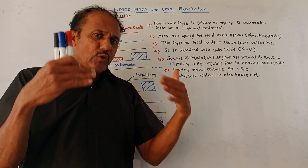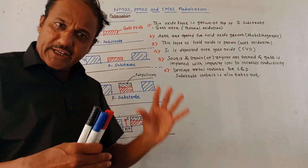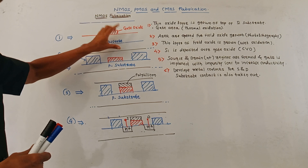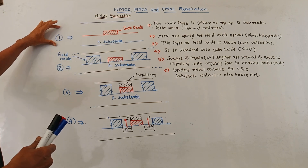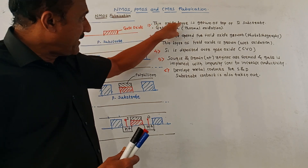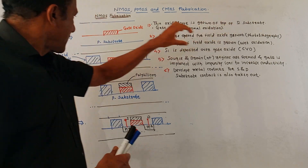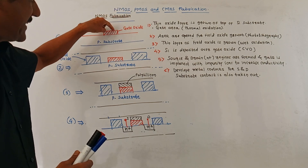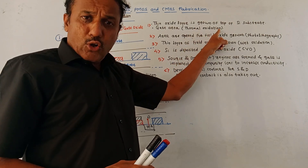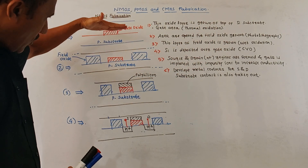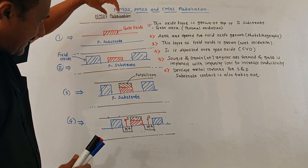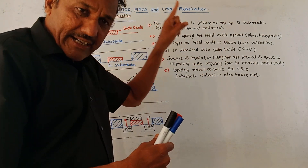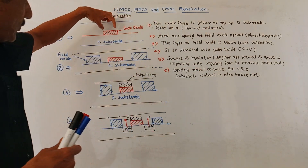The N-MOS fabrication is a very lengthy process, so I will explain the important steps required. To fabricate an N-MOS device, a P-type substrate is used. A thin oxide layer is grown on the top of this P-type silicon substrate. A thermal oxidation method is used for this. This thin oxide layer forms the gate dielectric or gate area, referred to as gate oxide.